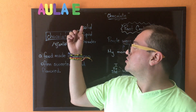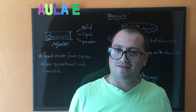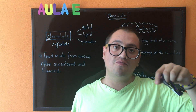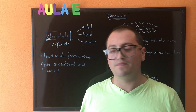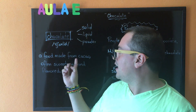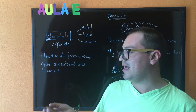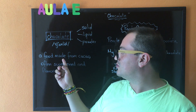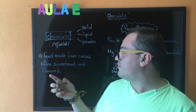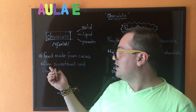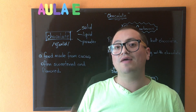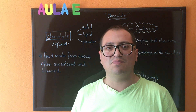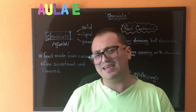Chocolate can be found solid, liquid, and powdered. Puedes encontrarlo en forma sólida, líquida o en forma de polvo. The chocolate is a food made from cacao, often sweetened and flavored. El chocolate es una comida que proviene del cacao y que generalmente se encuentra dulce y con algunas especias como canela, chile, entre otras.